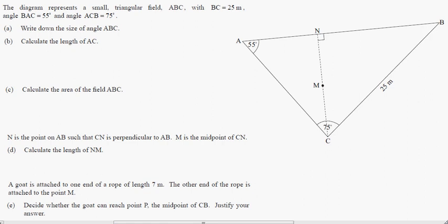The diagram represents a small triangular field ABC, with BC equals 25 meters, angle BAC is 55 degrees, and angle ACB is 75 degrees. Now write the size of angle ABC.